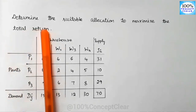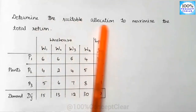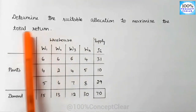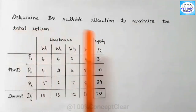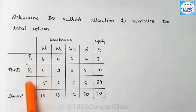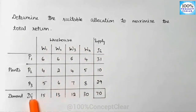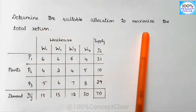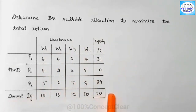Let's see the question: determine the suitable allocation to maximize the total return. So what do we do here? We find the suitable allocation to maximize the total return — that means the total return is the profit. We want to maximize the total profit. This is the maximization type of transportation problem.